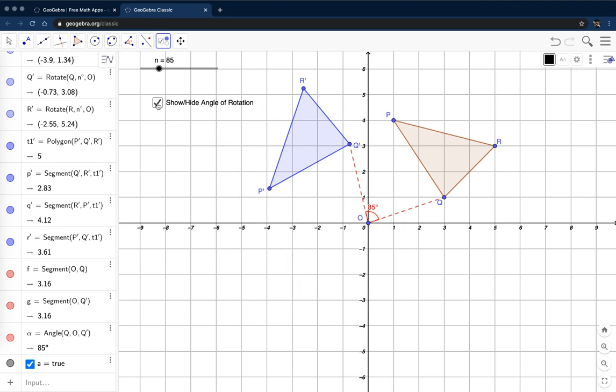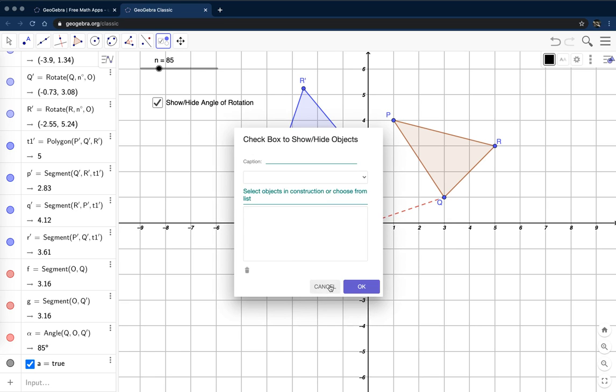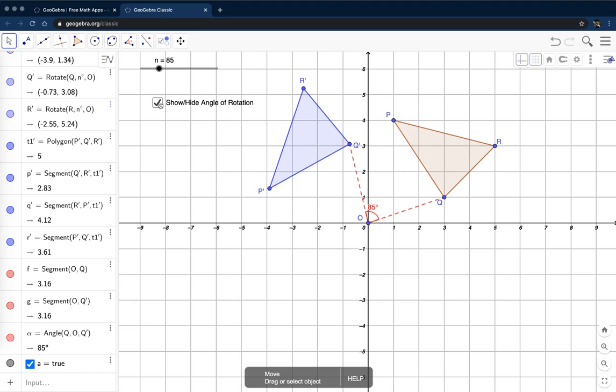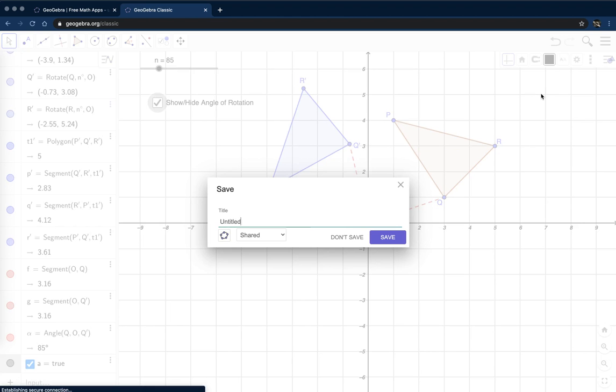Now, before I can test this, I have to save my work. So I'm going to come over here and hit save. Give it a name. Rotation worksheet. I have it shared and it's being saved to my GeoGebra cloud.